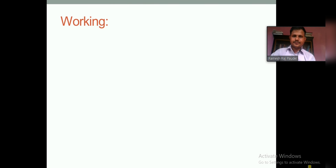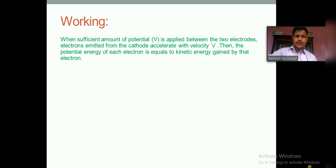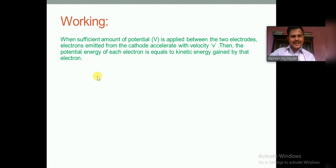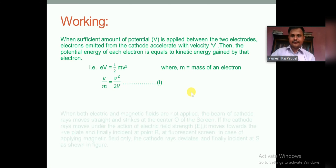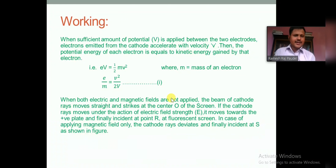When a sufficient potential V is applied between the two electrodes, electrons emitted from the cathode acquire velocity v due to the potential applied between electrodes A and C. The potential energy of each electron equals the kinetic energy gained: the potential energy is eV and the kinetic energy is ½mv². Rearranging this equation gives E/M = v²/2V, where v is the velocity of the electron and V is the potential applied between the two electrodes A and C.